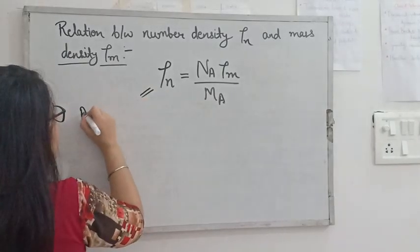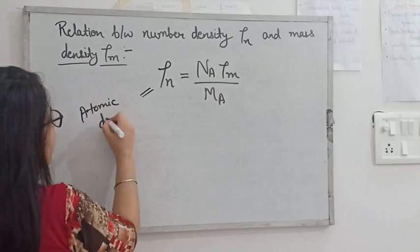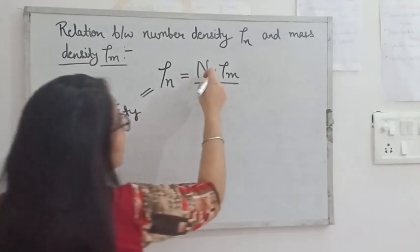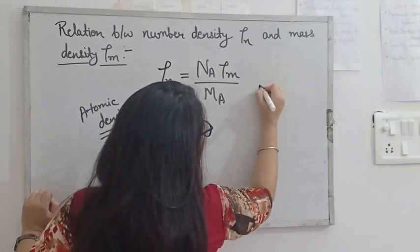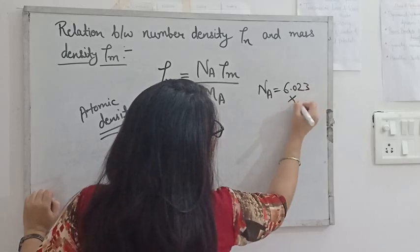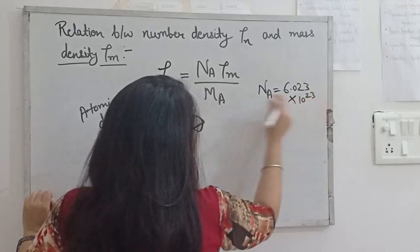Number density will be equal to the atomic density as well. And if we talk about Nₐ, what is Nₐ here? Nₐ is Avogadro number and the value of Nₐ will be equal to 6.023 times 10 to the power 23.